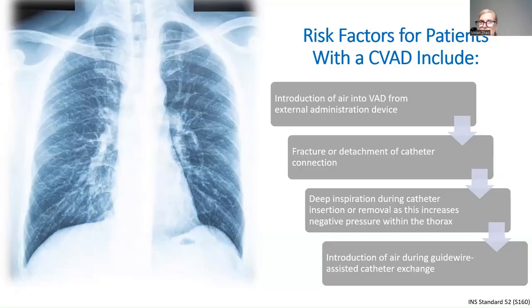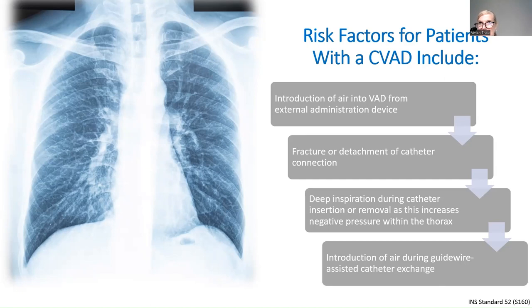Risk factors for air embolism in patients with a CVAD include air introduced from external administration devices such as unprimed tubing, fracture or detachment of catheter connections, a deep inspiration during catheter insertion or removal — which increases negative pressure in the chest — and introduction of air during guidewire-assisted catheter exchange.